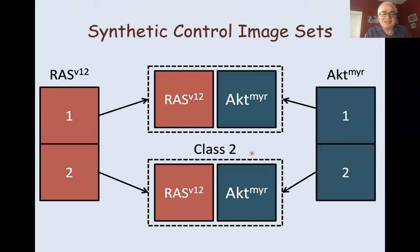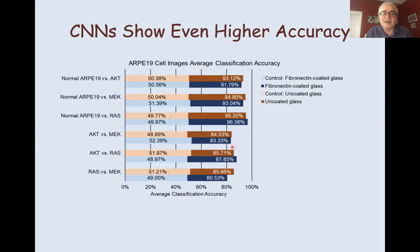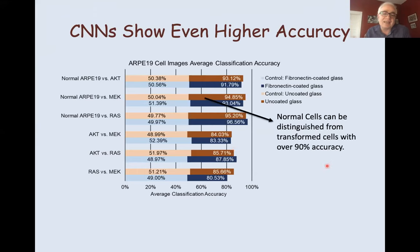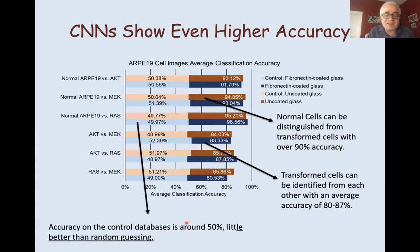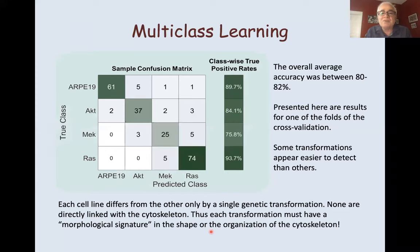We also make a synthetic control image set by randomly clubbing together images — for example, when doing RAS versus AKT, we take half RAS and half AKT, mix them together, and make two random classes just to see whether the CNN is actually picking up noisy artifacts in the imaging. The nice thing is that our CNNs actually outperform our ANNs — they show even higher accuracy. Normal cells can be distinguished from transformed cells with over 90% accuracy. Transformed cells can be identified from each other with an average accuracy of 80 to 87%. What makes me really happy is that the accuracy on the control database is about 50%, little better than random guessing. We can also do multi-class learning, which works really well with some very high accuracies.